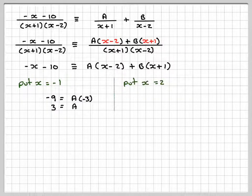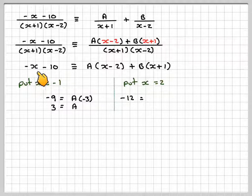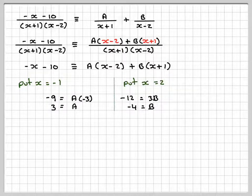Now put x equal to 2, which makes the A bracket zero. On the left, 2 minus 10 gives minus 12. On the right we just have 3b, so b equals minus 12 divided by 3, which gives b equal to minus 4.